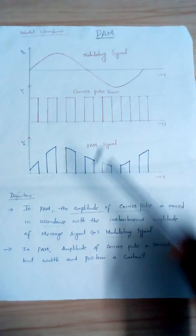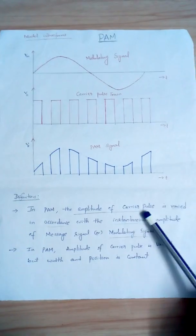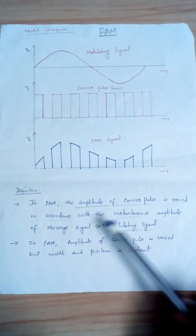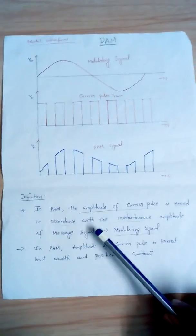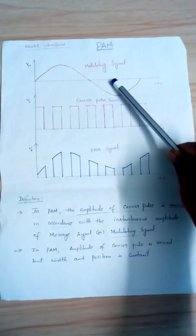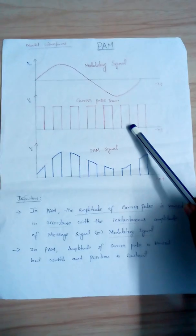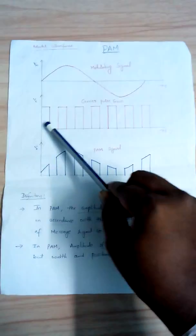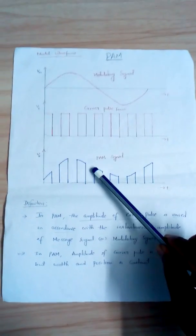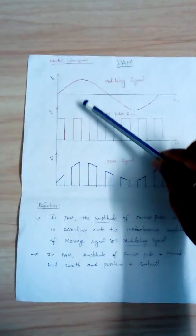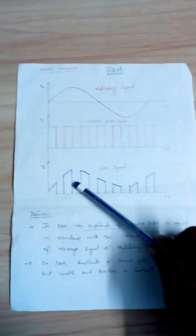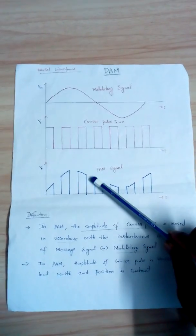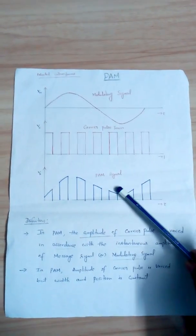In PAM, the amplitude of the carrier pulse is varied in accordance with the instantaneous amplitude of the message signal. The message signal is a continuous time signal, and the carrier is a pulsed carrier — a train of pulses, not continuous. The output PAM signal is the modulated signal: when the message amplitude increases, the pulse amplitude also increases; when it decreases, the pulse amplitude also decreases.